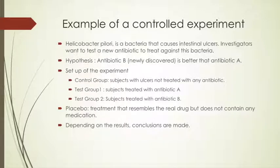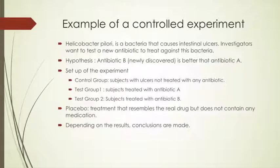So they set up an experiment. To set up a functional experiment, we need two different groups of subjects to test. A control group consists of subjects whose ulcers are not treated with any antibiotic — this will be our comparison group. Test group 1 is the subjects treated with antibiotic A, and test group 2 is subjects treated with antibiotic B. Depending on the results, we will compare them to the control group to test the effectiveness of the new drug being tested.